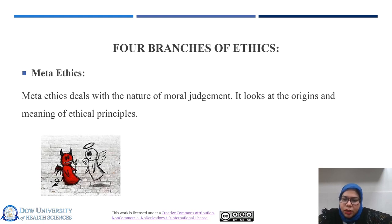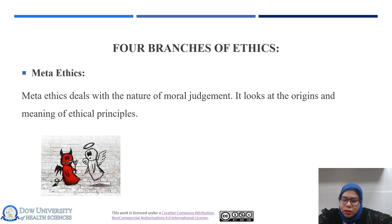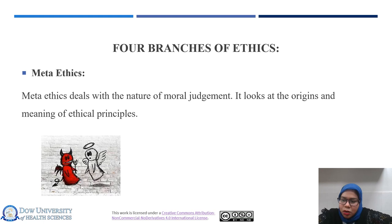An example of metaethics is ethical relativism, which puts that ethical judgments are relative to culture, social, and individual beliefs. It suggests that what is considered morally right or wrong can vary across different contexts. Another example is moral realism, which holds that there are objective moral truths that exist independently of human opinions or beliefs, arguing that moral facts can be discovered through reason and observation.